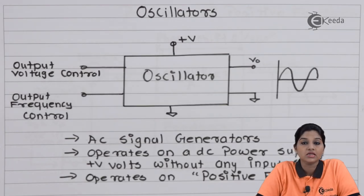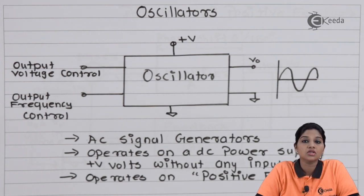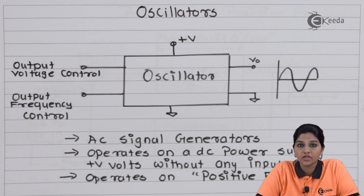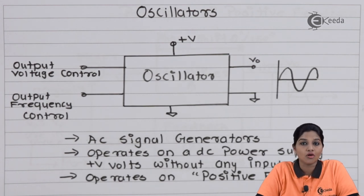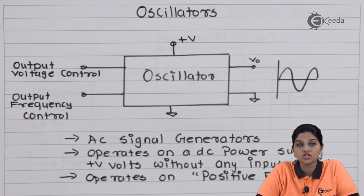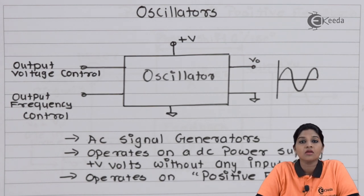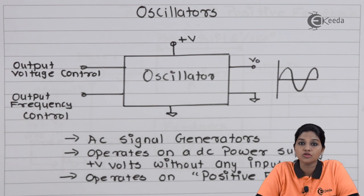Oscillators are basically AC signal generators that are used in laboratories for producing sine waves. Sine wave is a type of wave that is used as a test signal for many applications. So oscillators find important application in many laboratory applications. Now let's understand the concept of oscillator by using a simple block diagram.